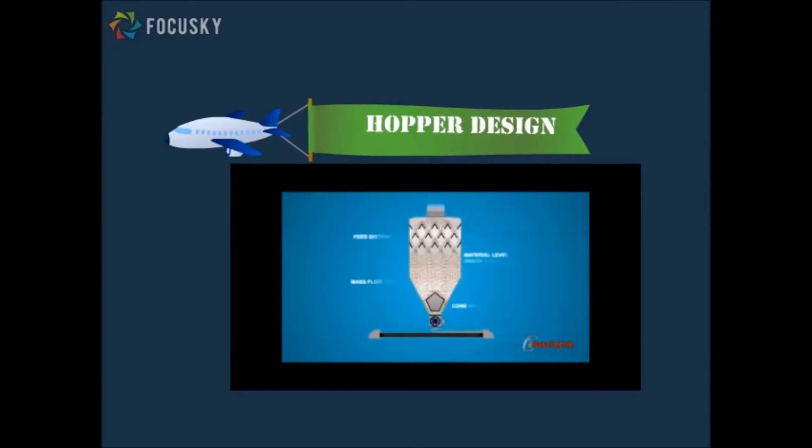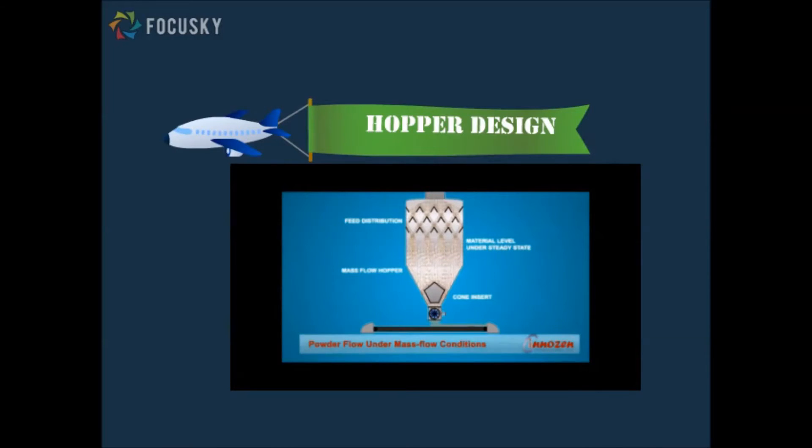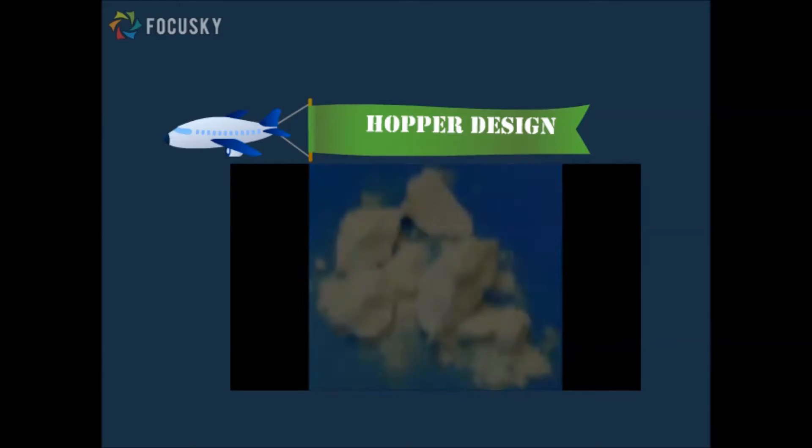Hopper is a storage vessel for bulk solid. It is designed to let the skimmed milk powder be transported with a smooth flow. In this stage, the size distribution of the skimmed powder are varied.